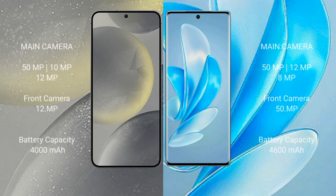Samsung Galaxy S24 features a triple camera setup: 50MP plus 10MP, 9MP plus 12MP, with a 12MP front camera. Vivo A17 Pro also features a triple camera setup: 50MP plus 12MP, 9MP plus 8MP, with a 15MP front camera.